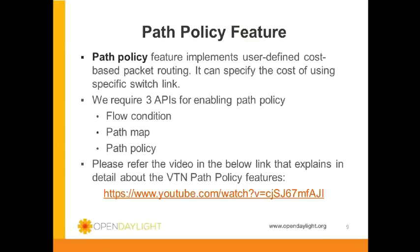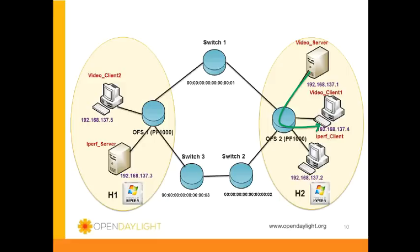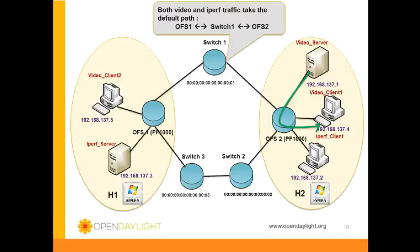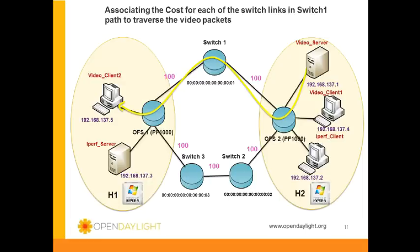The second feature demonstrated is the flexible path policy feature. Path policy feature implements user-defined cost-based packet routing. It can specify the cost of using a specific switch link. We require 3 APIs for enabling path policy: flow condition, path map, and path policy. By default, both the video and the IPERF traffic take the shortest path, that is OFS1 to switch 1 to OFS2. Application of the path cost in the topology is shown with an illustration here.